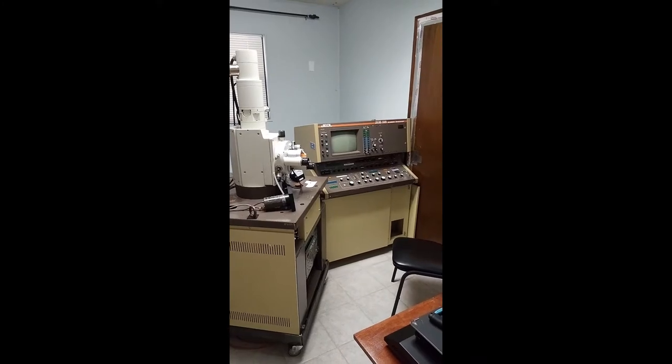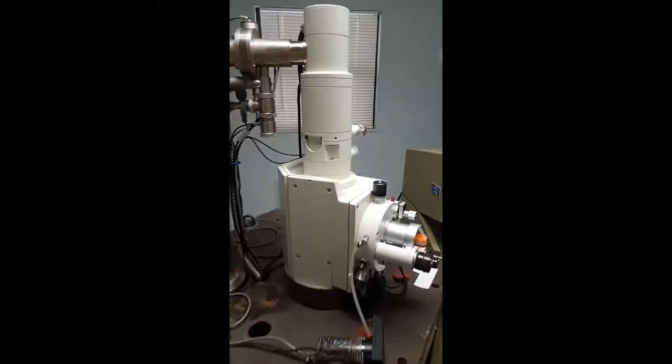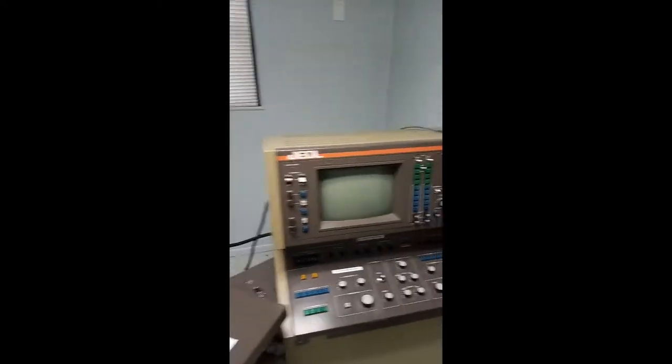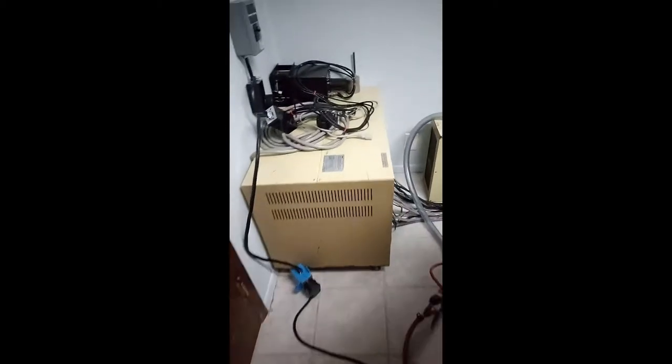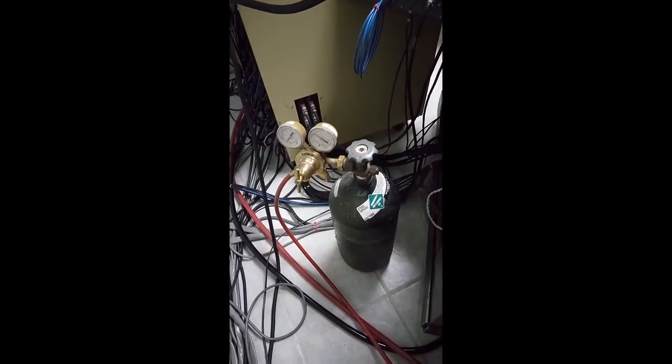Here is the JEOL JSM840. We have the microscope, the console unit, a water recirculation chiller, the power supply, the roughing vacuum pump, and a high-pressure nitrogen bottle.